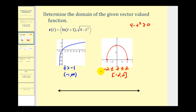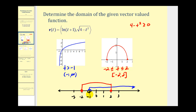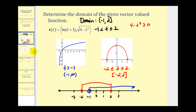Now we want to graph these two intervals on the same number line and determine where they intersect. For t greater than negative one, we have an open point on negative one with an arrow to the right. For the closed interval from negative two to two, we have two closed points at negative two and positive two. The intersection is the values graphed in both, which gives us the interval from negative one to positive two — open on negative one and closed on positive two. Or we could say t is greater than negative one and less than or equal to positive two.